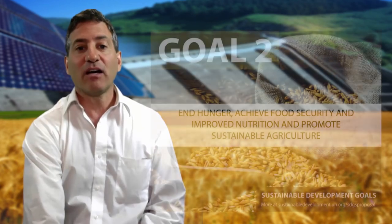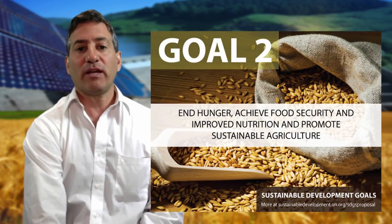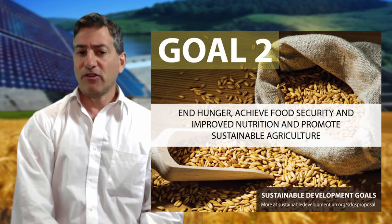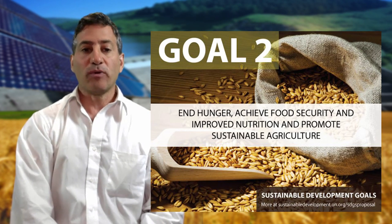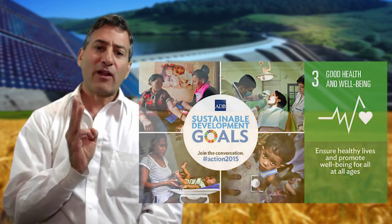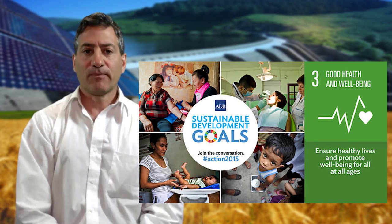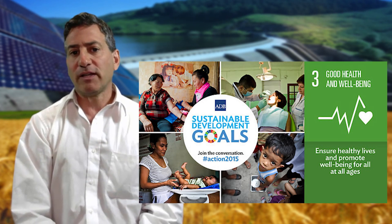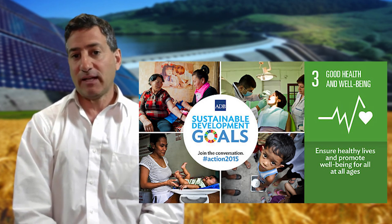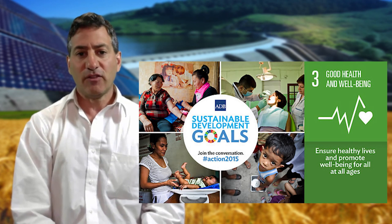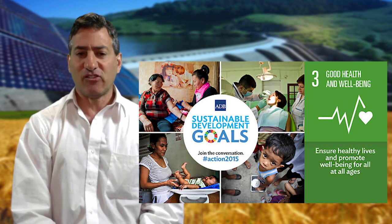Goal two: end hunger, achieving food security and improved nutrition and promoting sustainable agriculture. This goal is well within the scope of the nexus. Goal three: ensure healthy lives and promote well-being at all ages. Insofar as healthy food and clean water promotes healthy lives, and clean renewable energy eliminates the grave threats of air and water pollution, this one is also within our domain, leaving medical knowledge and treatment as an equity issue.